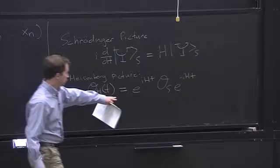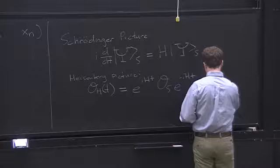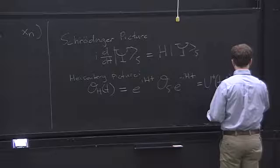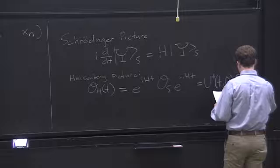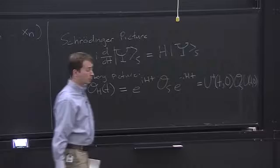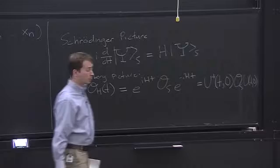I'm going to introduce a new notation for these factors, calling them U and U-dagger. We can think of these as time evolution operators — they take an operator at t=0 and evolve it forward in time.